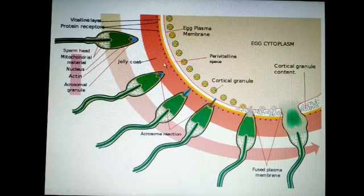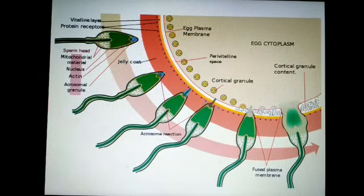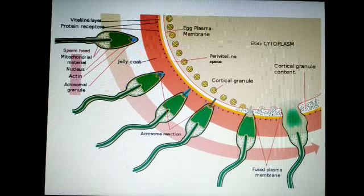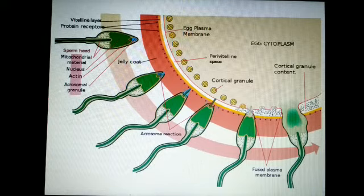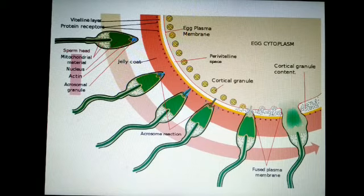The membrane changes block the entry of other sperm. The acrosomal enzymes are secreted, and this acrosomal secretion helps the sperm enter into the cytoplasm of the ovum. These enzymes also help in the completion of the meiosis division of the secondary oocyte.